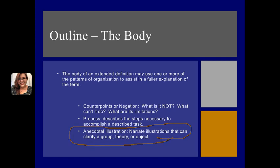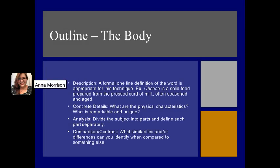For body paragraphs, you can use descriptions — maybe a formal one-line definition like: 'Cheese is a solid food prepared from the pressed curd of milk, often seasoned and aged.' Concrete details are always important: what are the physical characteristics? What is remarkable and unique? Analysis is great — divide the subject into parts and define each part separately. Or you could use comparison and contrast: what similarities or differences can you identify when compared to something else?